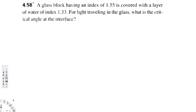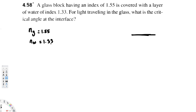This problem involves a glass block having an index of 1.55, covered with a layer of water with index 1.33. For light traveling in the glass, we need to find the critical angle at the interface. So ng = 1.55 and nw = 1.33.